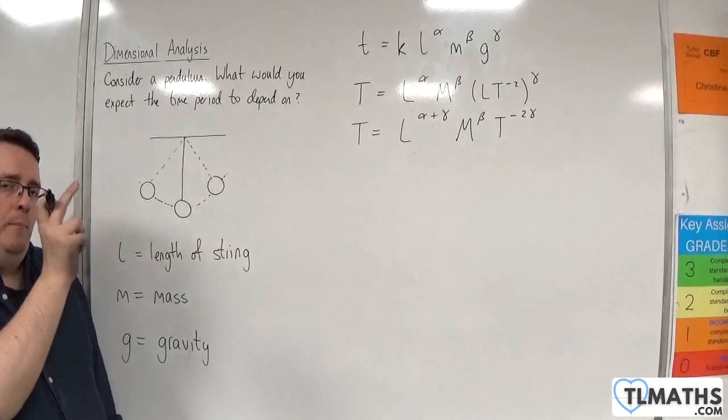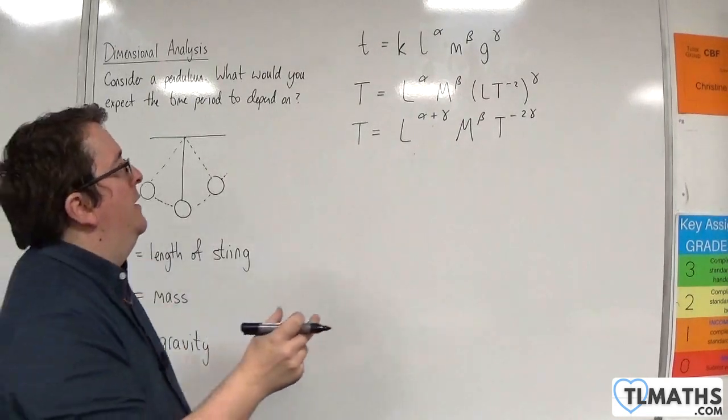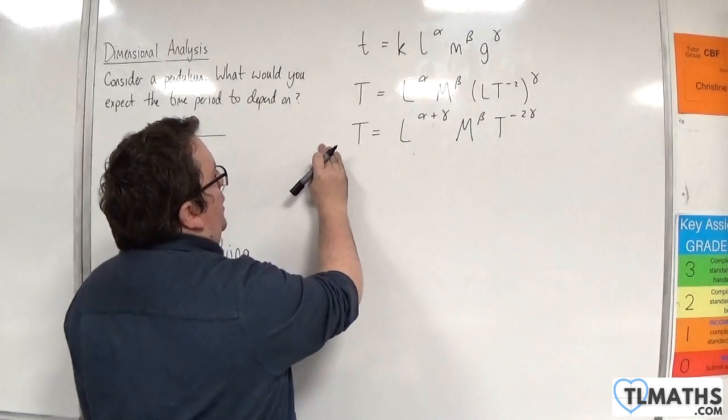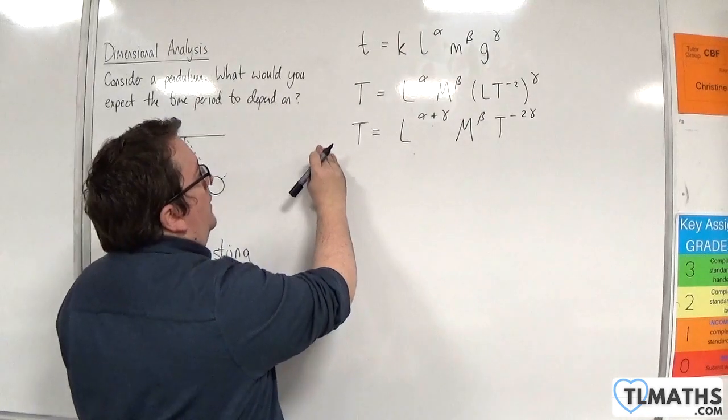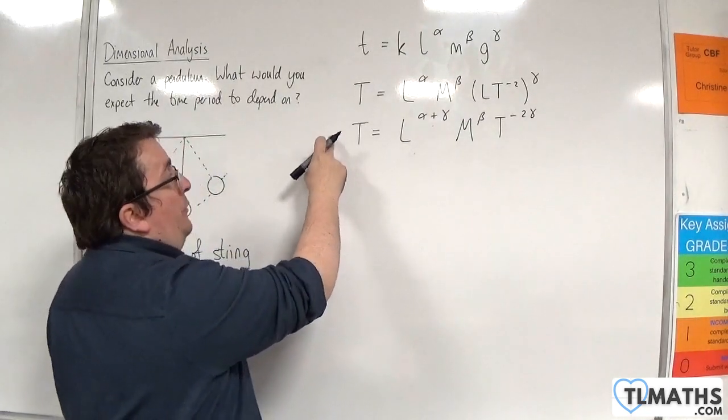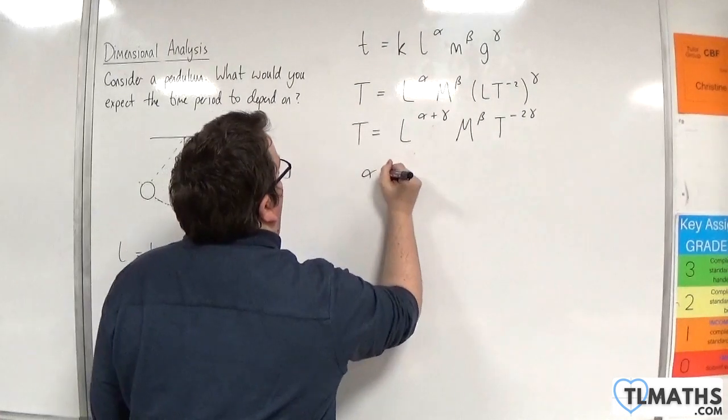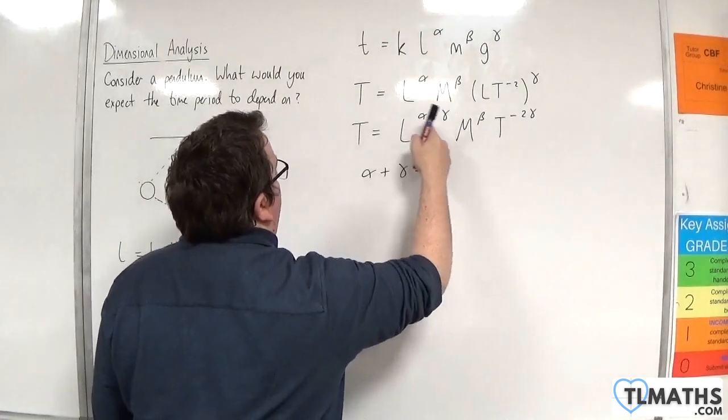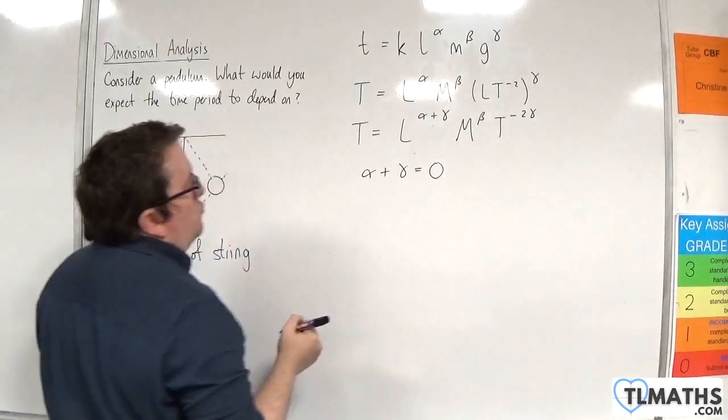If we compare indices on either side, because on the left-hand side we've got no Ls, it would be L to the power of 0 on the left-hand side. So the alpha plus gamma, the index there, would have to be equal to 0.